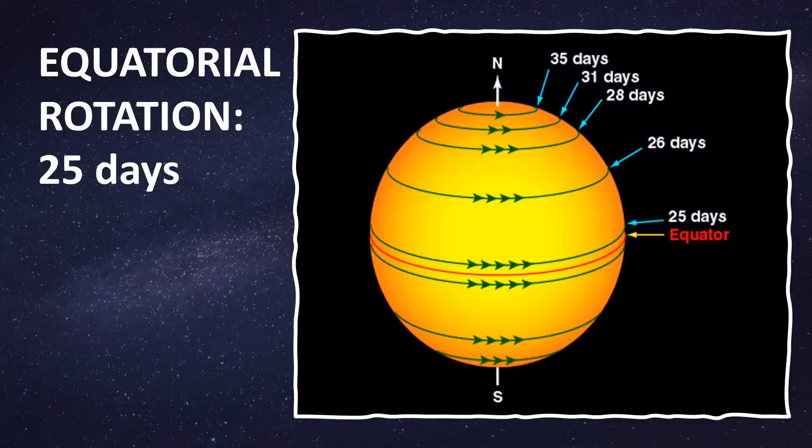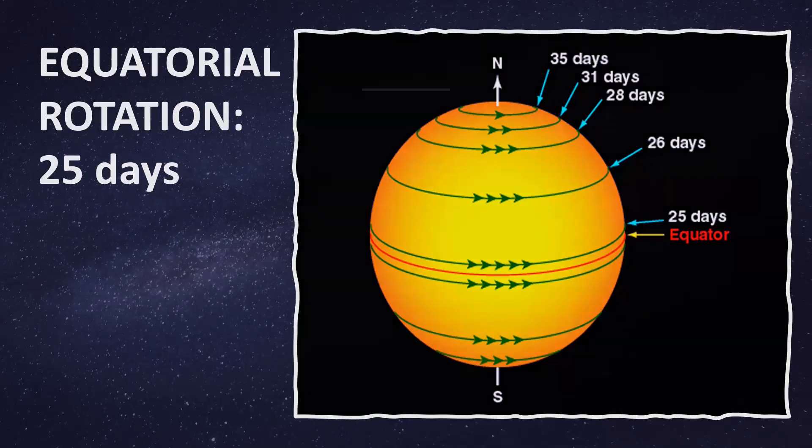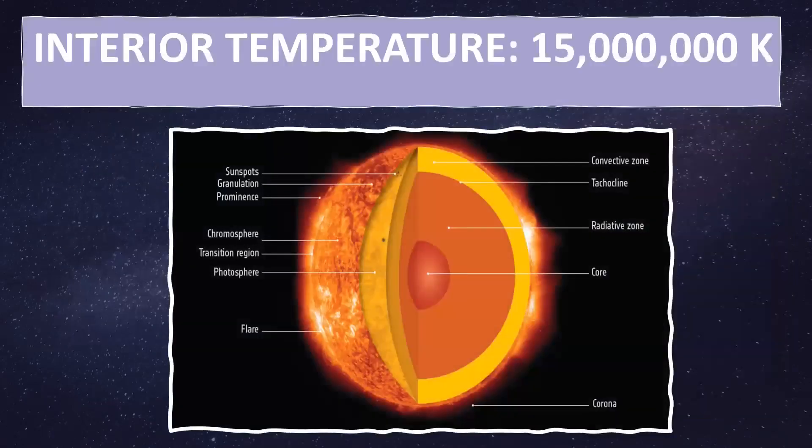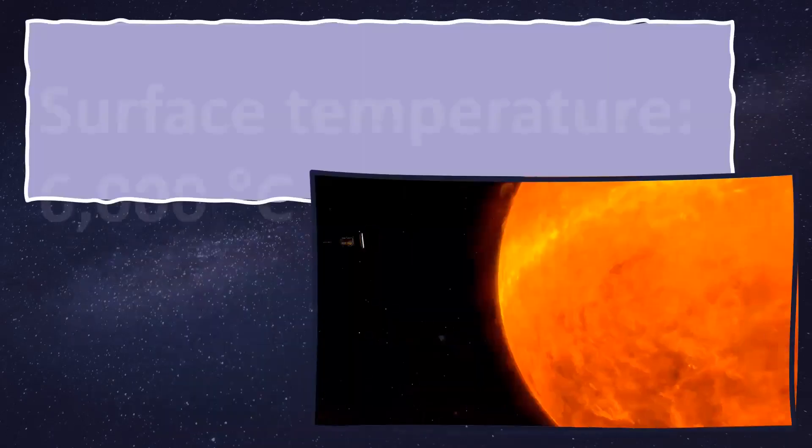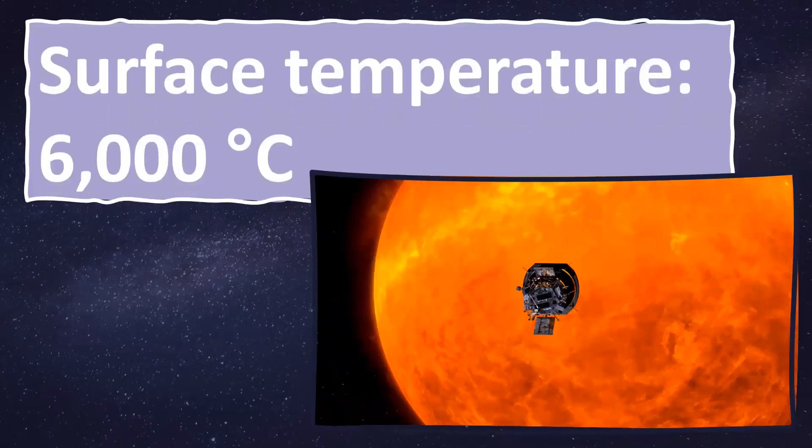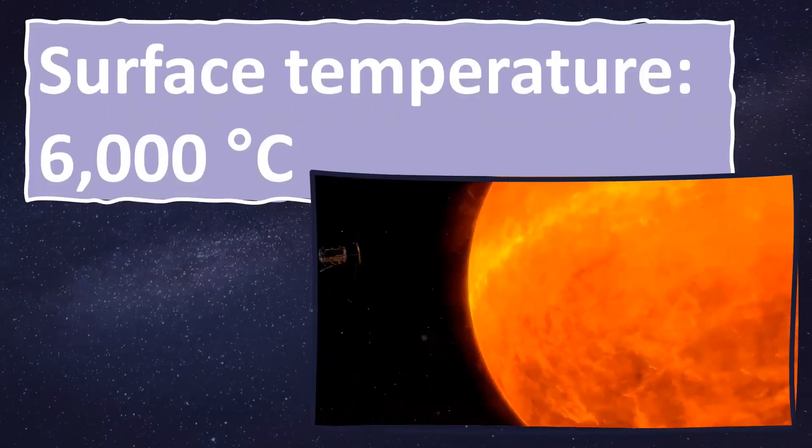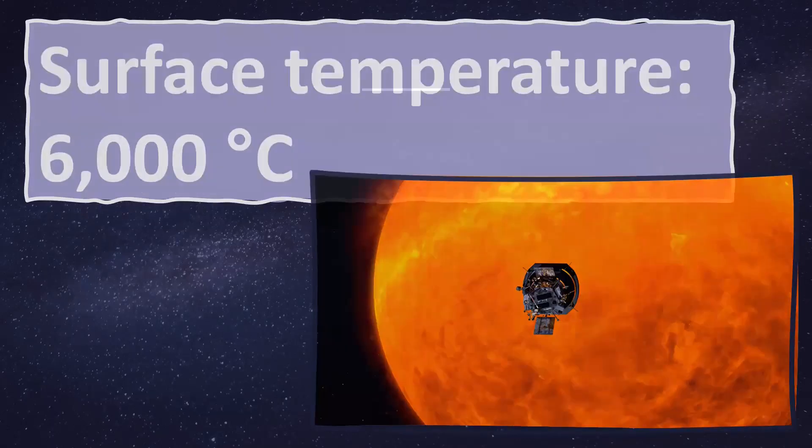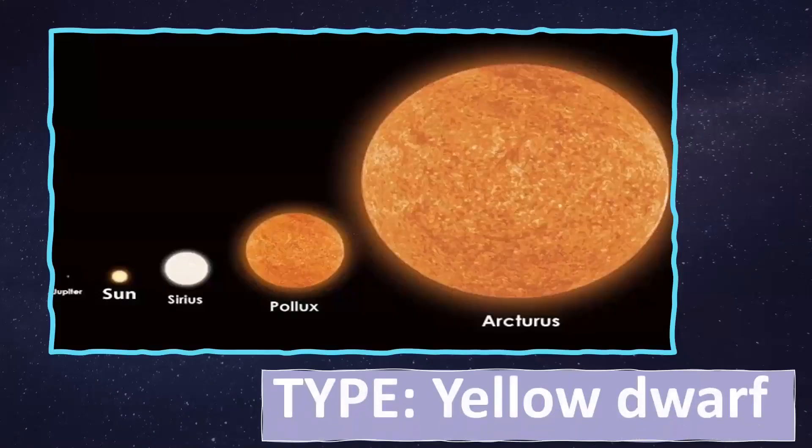The equatorial rotation takes 25 days. The interior temperature is 15 million Kelvin, while the surface temperature of the sun is 6,000 degrees Celsius. It is a yellow dwarf compared to other stars.